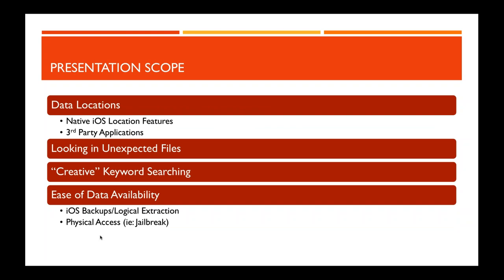A little about the scope of this presentation: we'll be talking about a lot of native and third-party areas. I won't cover every single place you could find a geolocation item, but I'll give you hints and creative ways to look for particular items. I'll point out some keywords you might want to search across the whole evidence area to find a lat/long. Depending on your acquisition type — logical through Cellebrite or an iOS backup — you may get less data. A jailbreak giving physical access will yield a lot more.